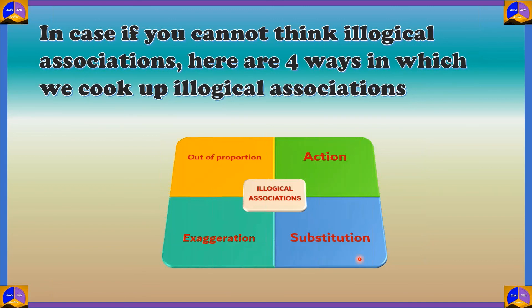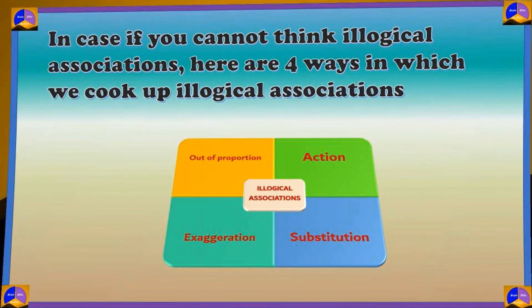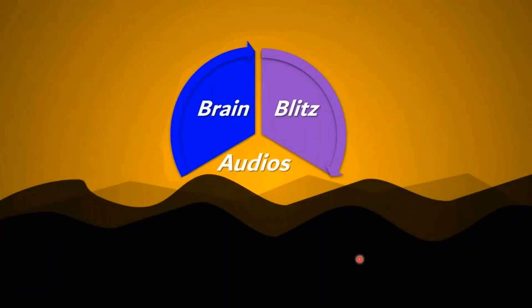That's the beauty of the link system — it's very cool and a very good way of getting a trained memory. This is one of the biggest aspects of getting a trained memory. That's all for this episode of Brain Blitz Audios. Today's episode of Memory Hacks was pretty interesting, and we gave you a very cool trick by which you can remember a list of items.